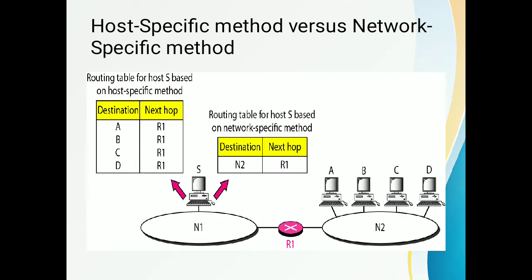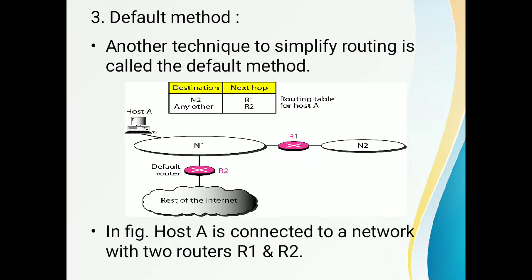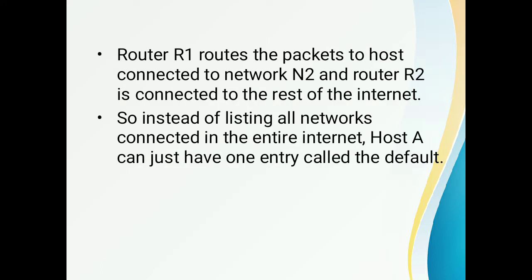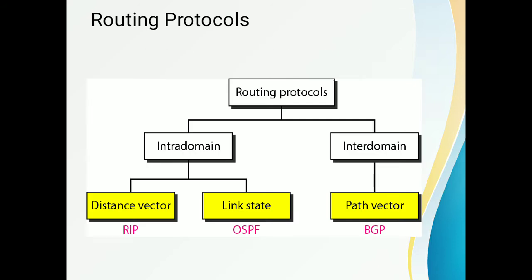Third, the default method: another technique to simplify routing is called the default method. In the figure, host A is connected to a network with two routers, R1 and R2. Router R1 routes the packet to hosts connected to network 2, and router R2 is connected to the rest of the internet. So instead of listing all networks connected in the entire internet, host A can just have one entry called the default.